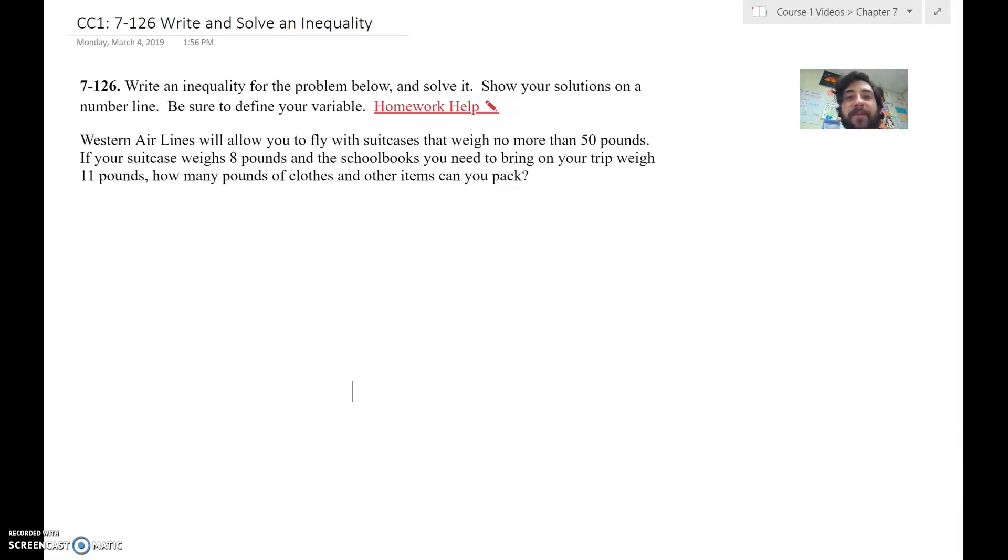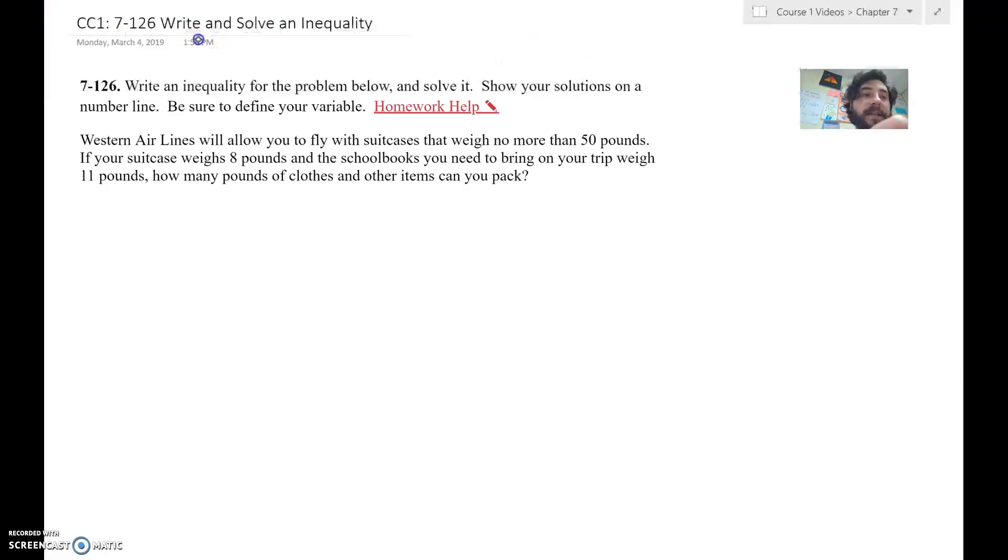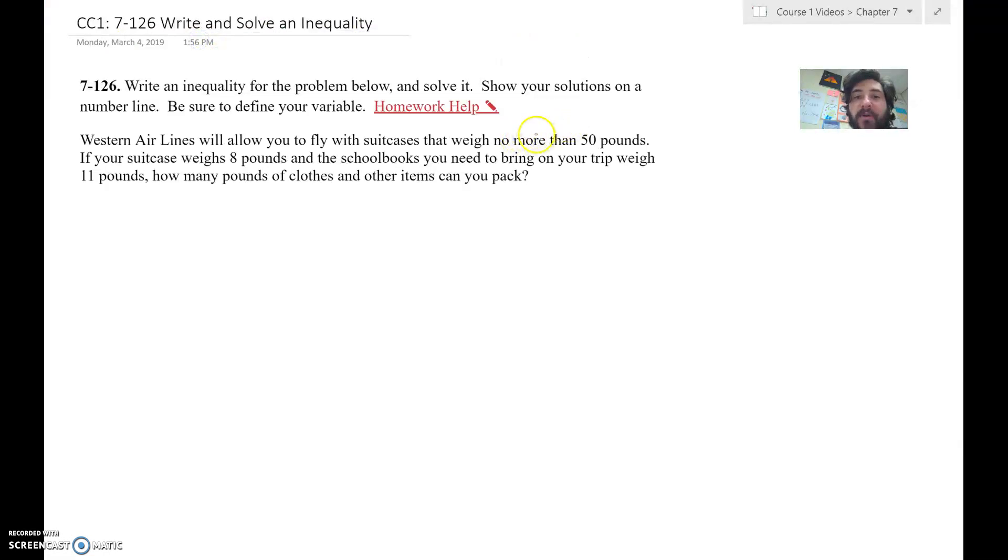This problem is from Chapter 7. So it says write an inequality for the problem below and solve it. Show your solutions on a number line. Be sure to define your variable. So it says Western Airlines will allow you to fly with suitcases that weigh no more than 50 pounds. So here is our constraint, that our suitcase, that the total weight, that the weight can be no more than 50 pounds.